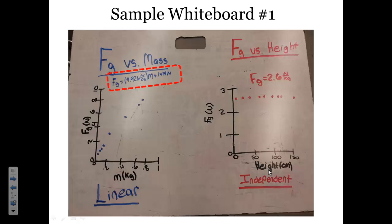This is one sample whiteboard from yesterday. They found a linear relationship between mass and the force of gravity. And this was the equation that they found. They had a slope of 9.926 newtons per kilogram and a very small y-intercept.